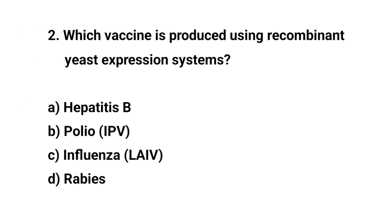Question number 2. Which vaccine is produced using a recombinant yeast expression system? The right answer is A: Hepatitis B.